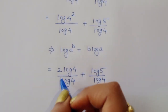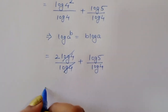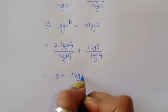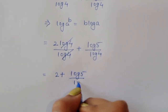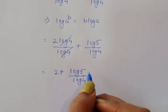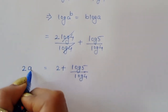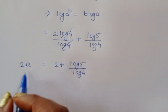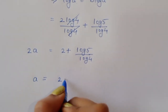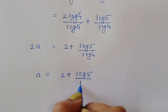Here 2 times log of 4 divided by log of 4: log of 4 cancels, so we get 2 plus log of 5 divided by log of 4. This is the value of 2a, so a is equal to 2 plus log of 5 divided by log of 4, all divided by 2.